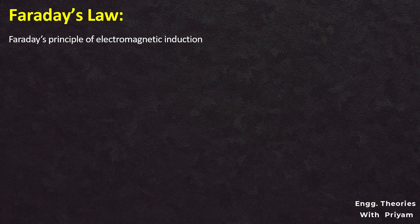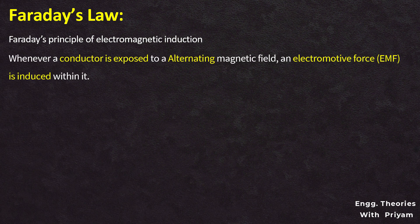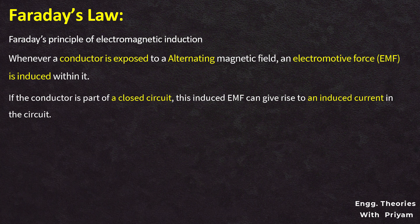The phenomenon of the electromagnetic induction dictates that whenever a conductor is exposed to an alternating magnetic field, an electromotive force or EMF is induced within it. And if the conductor is a part of a closed circuit, then this induced EMF can give rise to an induced current in the circuit.